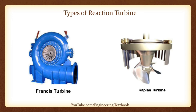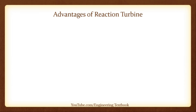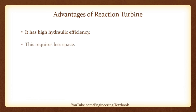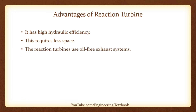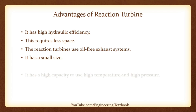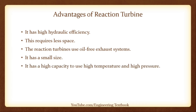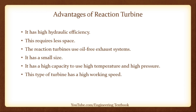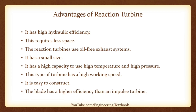This is why Kaplan turbines have high full load efficiency and high part-load efficiency. Advantages of Reaction Turbines: they have high hydraulic efficiency, require less space, use an oil-free exhaust system, have a small size, have high capacity to handle high temperature and high pressure, have a high working speed, are easy to construct, and the blades have higher efficiency than impulse turbine blades.